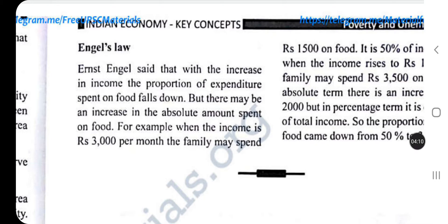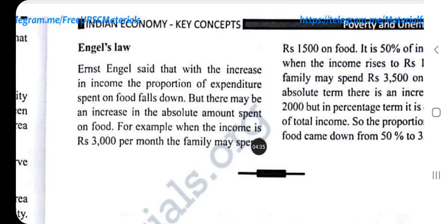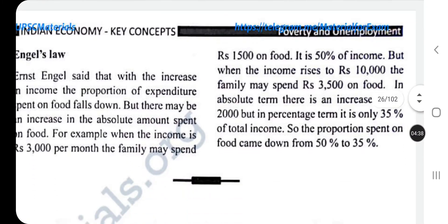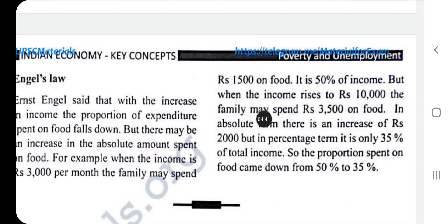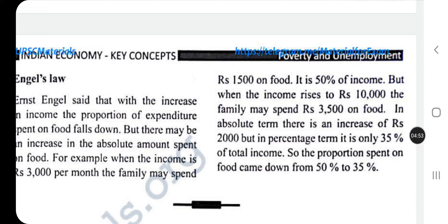If a family's income increases, the proportion spent on food falls down. There may still be an increase in the absolute amount spent on food. For example, if income is 3,000 rupees, then 1,500 rupees may be spent on food. But if income rises to 10,000 rupees, then 3,500 rupees may be spent on food — a higher absolute amount but a lower proportion.